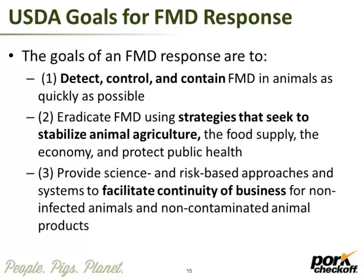We also have to seek strategies to stabilize animal ag. That means getting out messages that food is safe and that people can still consume products that are safe to eat, even in the face of an outbreak. We're going to have 25% more pork on the market whenever we get an FAD, so we've got to have messaging to make sure people are still willing to eat pork. Another goal is to facilitate continuity of business — how do you make sure that people remain viable, not just producers, but all our secondary industries such as truck washers, transportation, and feed and grains.